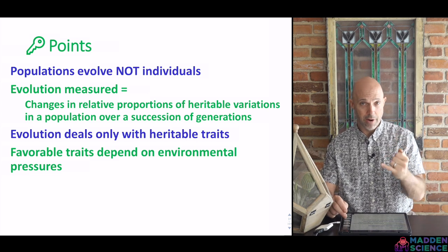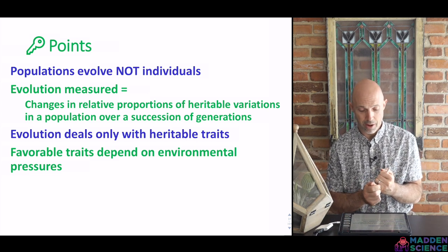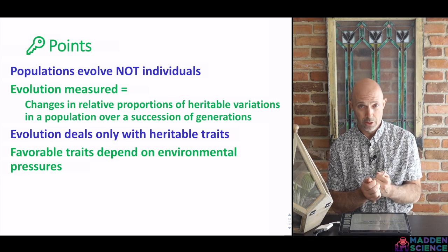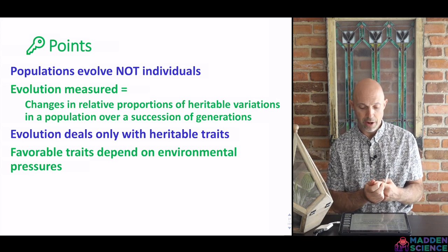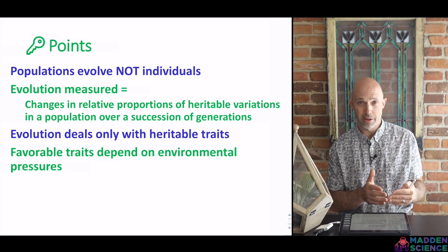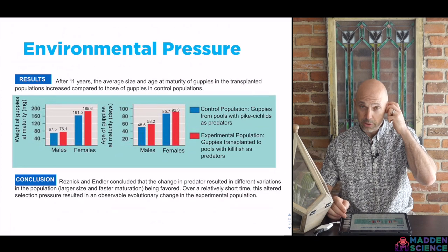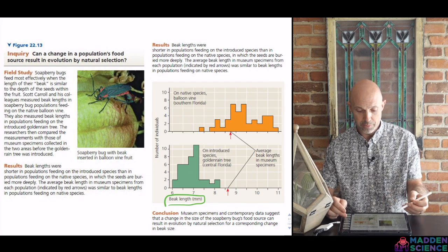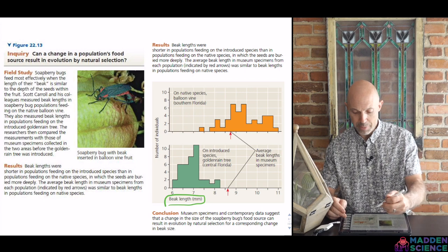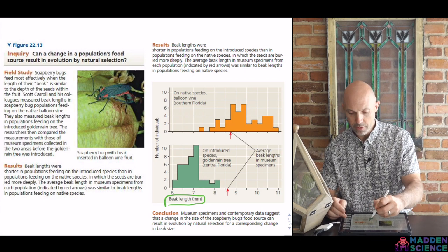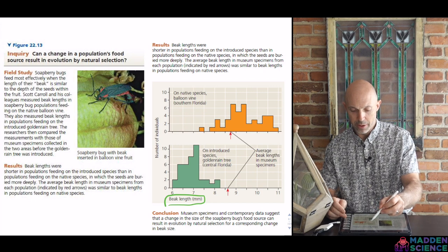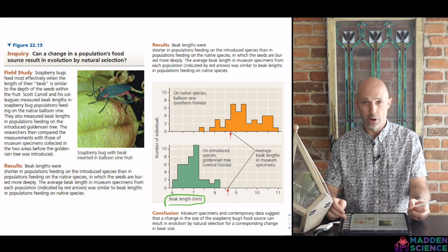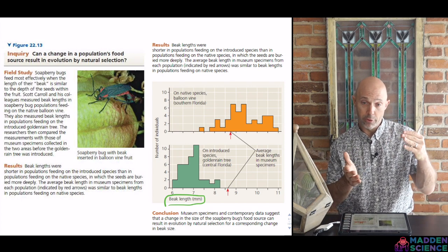Closing out this part with environmental pressures and some key points. First, populations evolved, not individuals. Evolution can be measured — we'll look at Hardy-Weinberg later, possibly in another video. Evolution deals only with what is heritable. And favorable traits depend — it's context specific, depends on environmental pressures. A study you can look at here with guppies in pools, or even here in Florida with invasive species and soapberry bugs. Their beak length in orange versus green — orange beak length with their native species, balloon vine; and green, an introduced golden rain tree — where the beak length had to get longer in order to adapt for a deeper fruit within that seed.